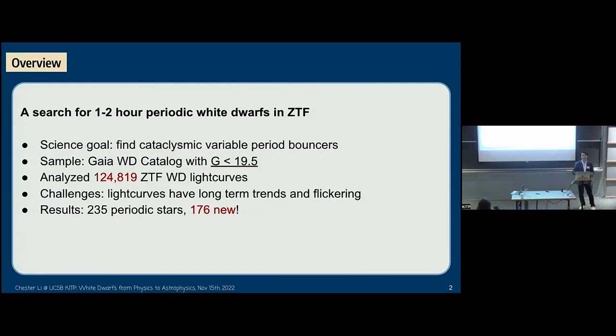We encountered some challenges during the search, mainly due to long-term trends and flickering in the light curves. But we got a solution to that. Our results show that we found 235 short periodic stars, and 176 of them are actually new.